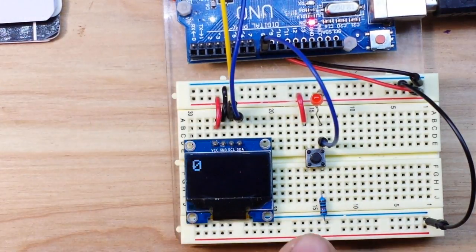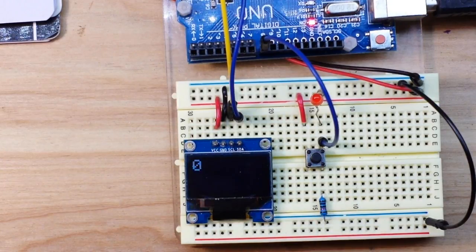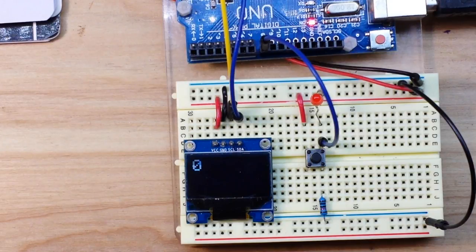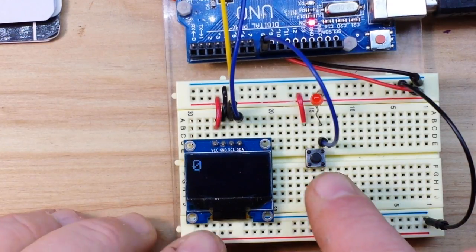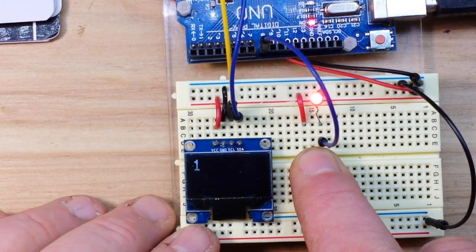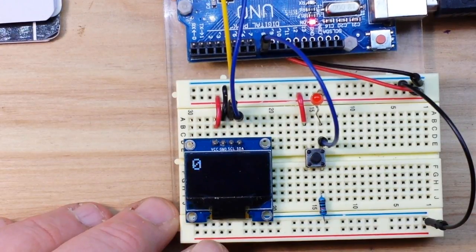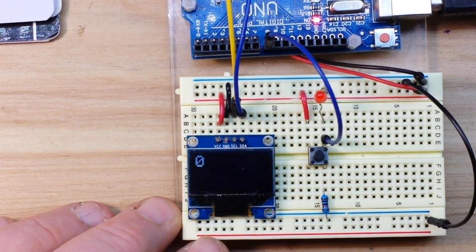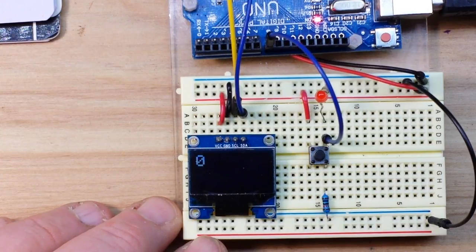So once again, to choose your resistor value you want to make sure it's somewhere in the area of 5 to 10k, and the pull-down gives you the logical one,